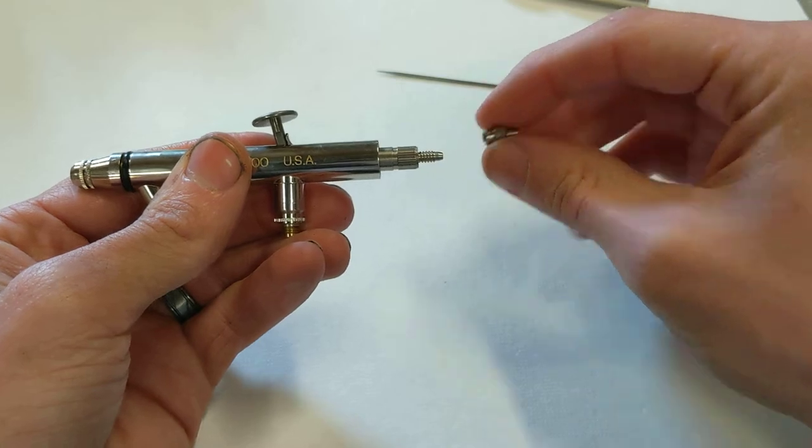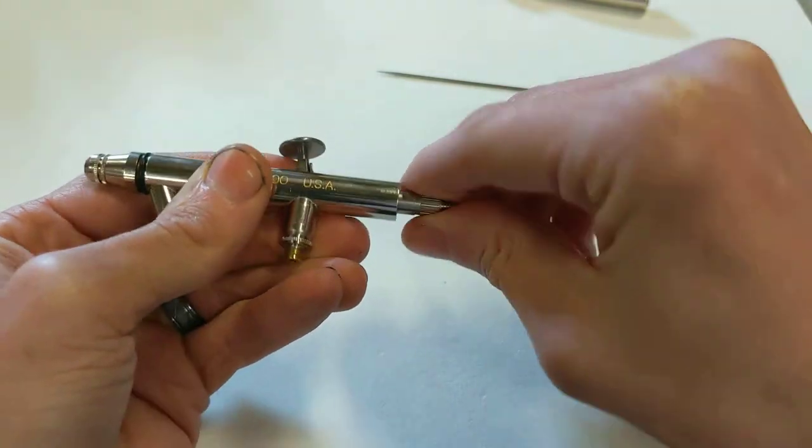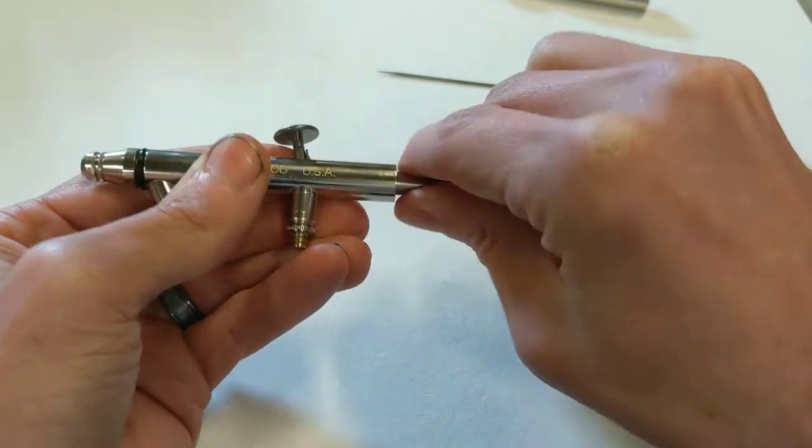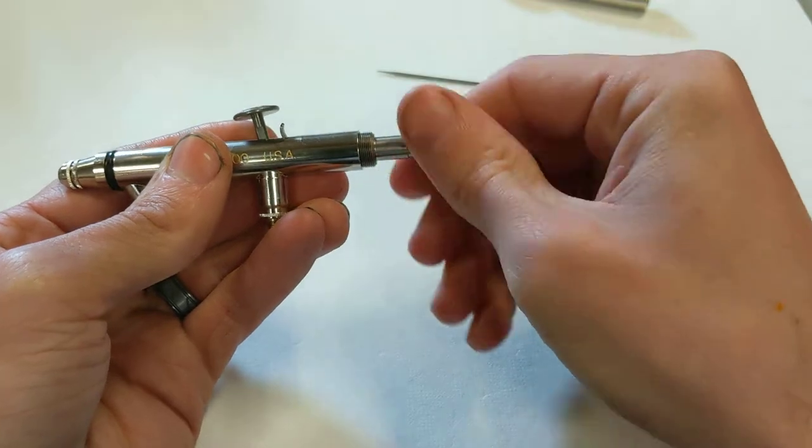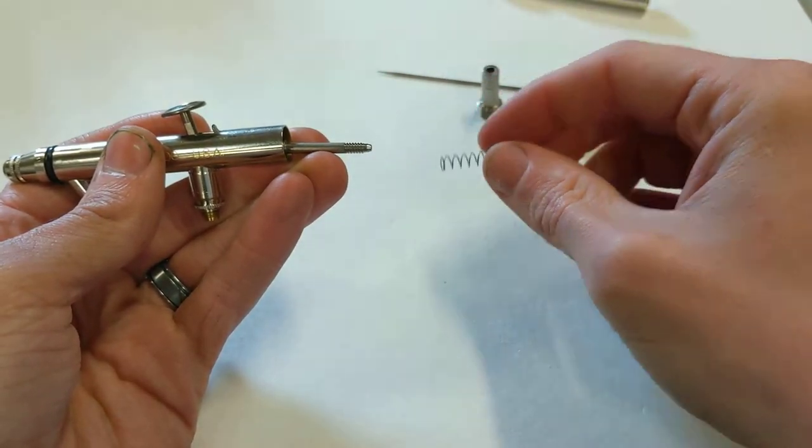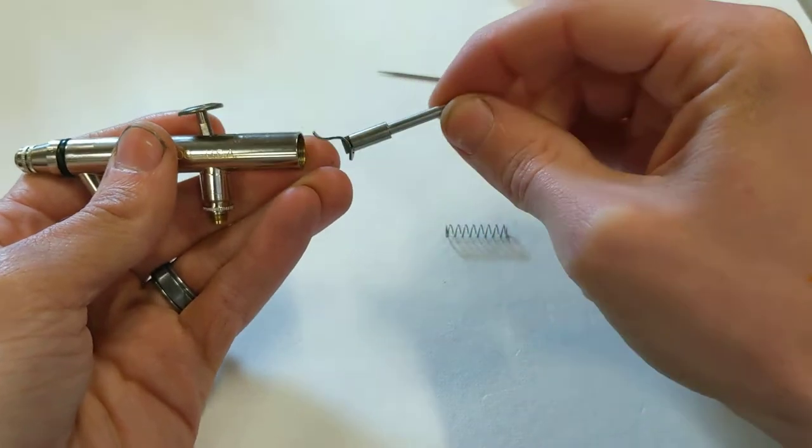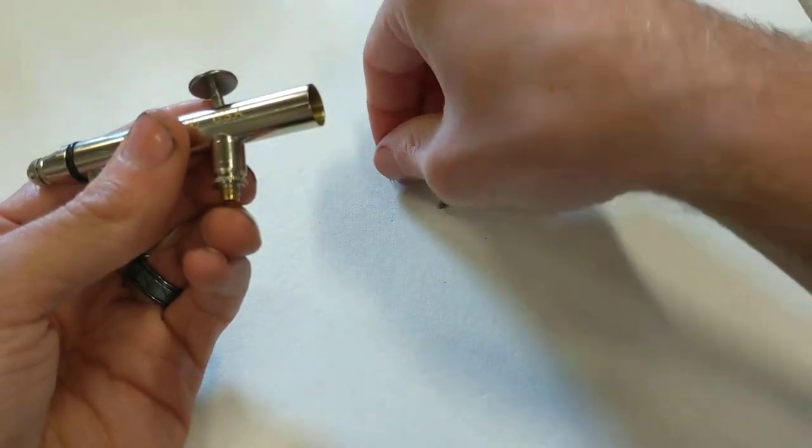I'm going to go ahead and take this nut all the way off and unscrew this thing. This thing is the proper term here. And that exposes this spring and the needle tube rocker assembly. Let's try not to lose that.